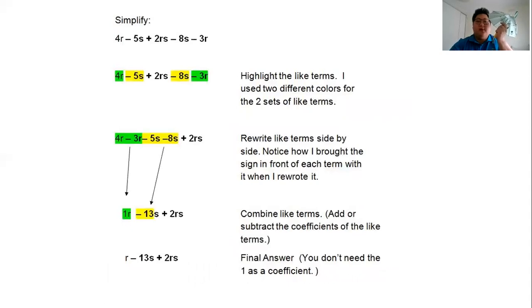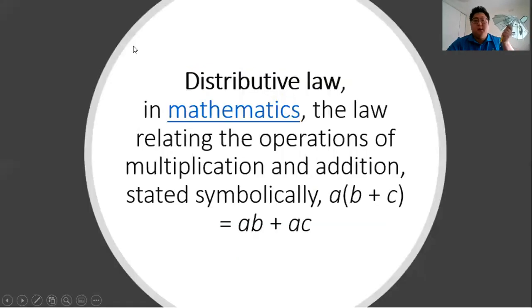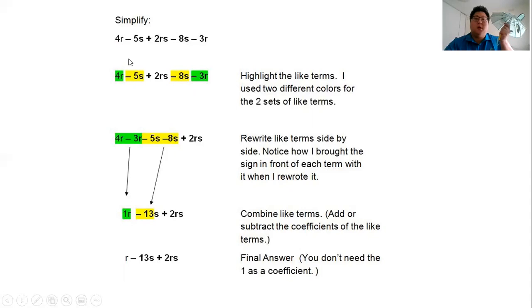Our next one, a little bit harder where we have takeaways. We are to simplify 4r minus 5s plus 2rs minus 8s minus 3r. Our r here and we've got an r there, I'm going to give it green. Make sure that you highlight also the sign in front of that term because it belongs together. Then we have a negative 5s here and a negative 8s here, so we're going to give it yellow.